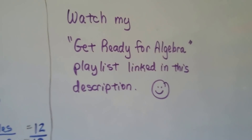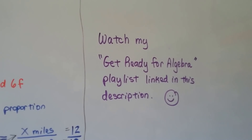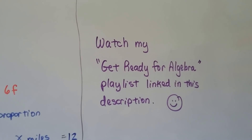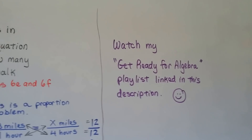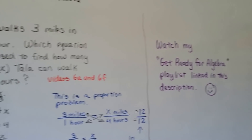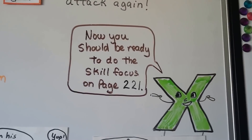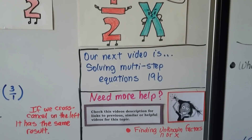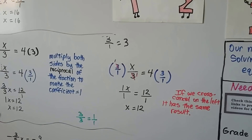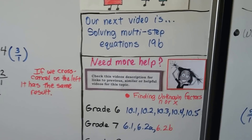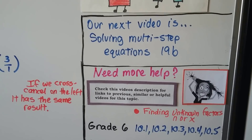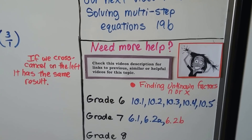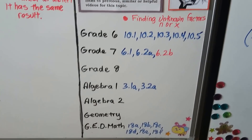If words like coefficient, variable, and reciprocal are giving you trouble, take a break and watch my Get Ready for Algebra playlist linked in the description. There's a handful of videos there that are easy to watch, not very long, and they'll help you get used to this wording. You should now be ready to do the skill focus on page 221. Our next video is solving multi-step equations, lesson 19b.